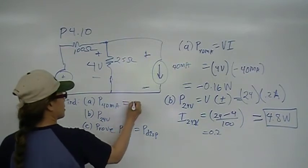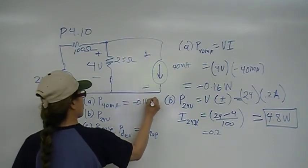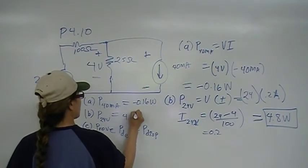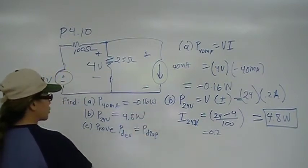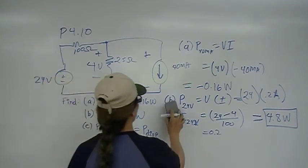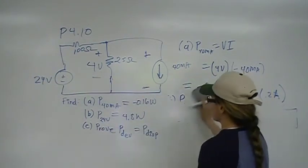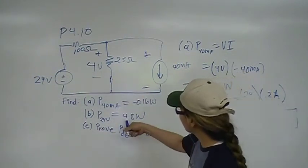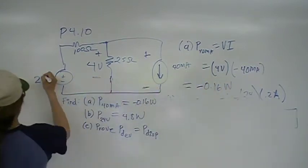That's being generated by this voltage source. So, this is negative 0.16 watts. This is 4.8 watts. Now, we need to prove that power developed and power dissipated are equal. So, we know that power we have right here. Let's account for it.